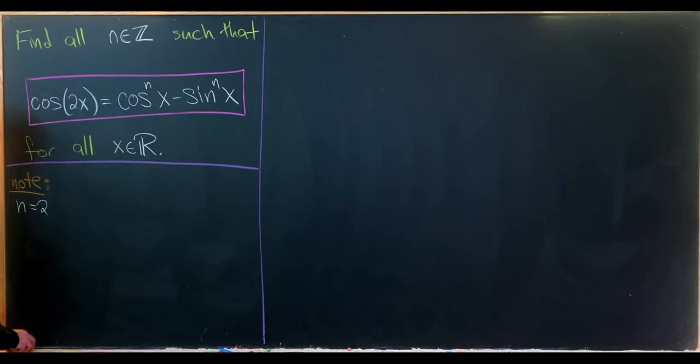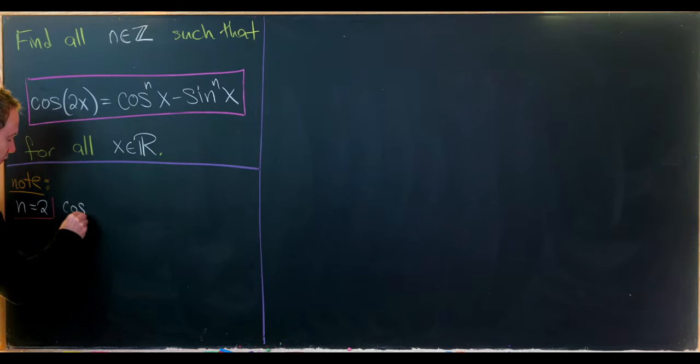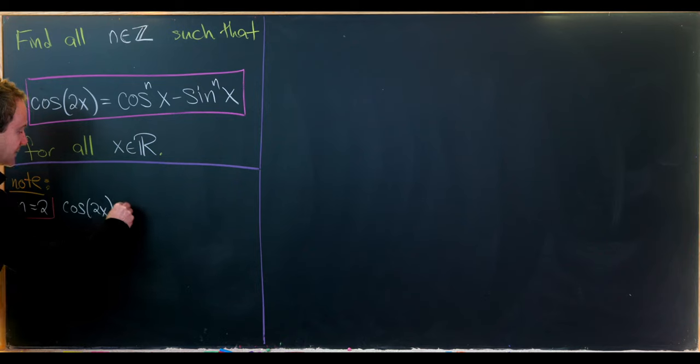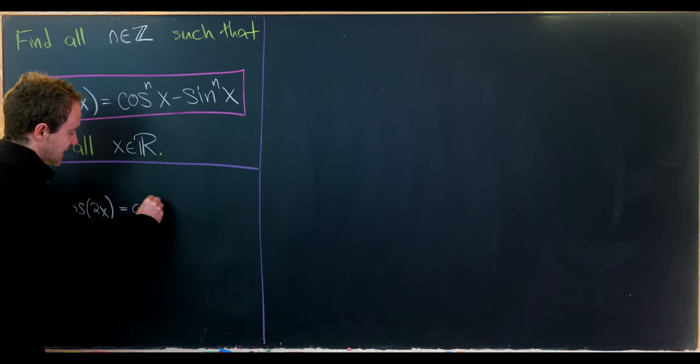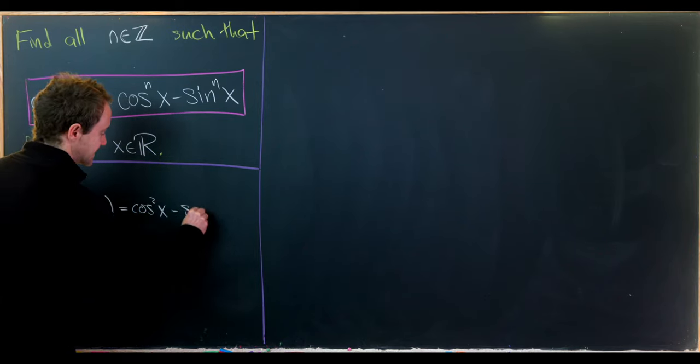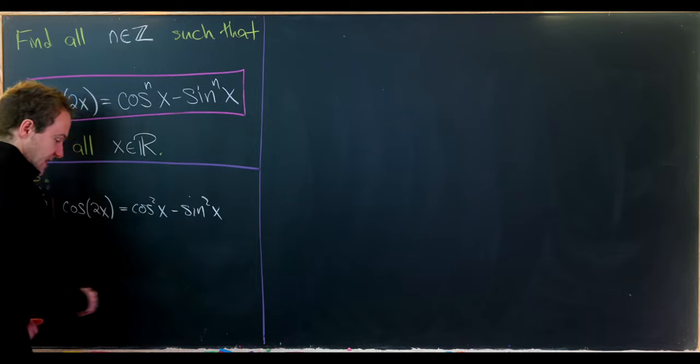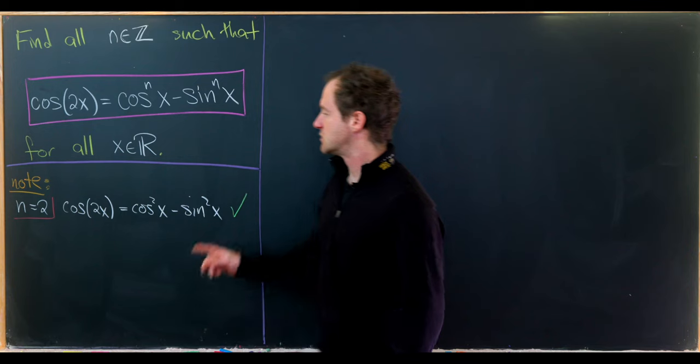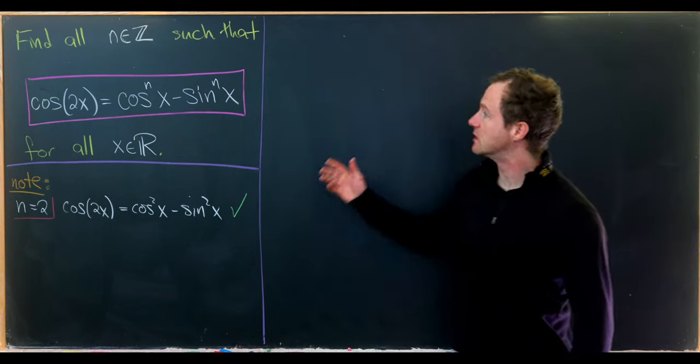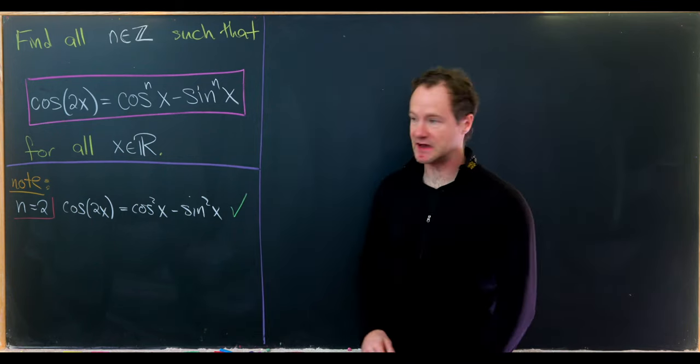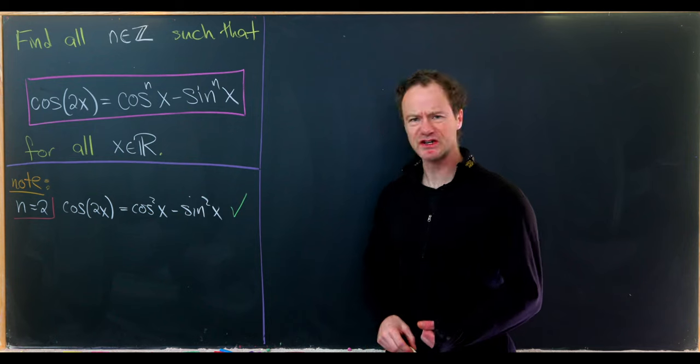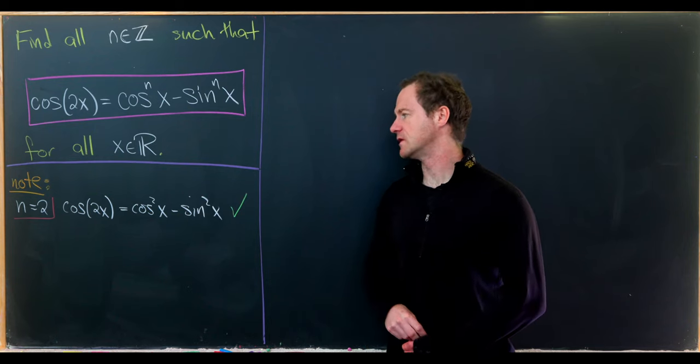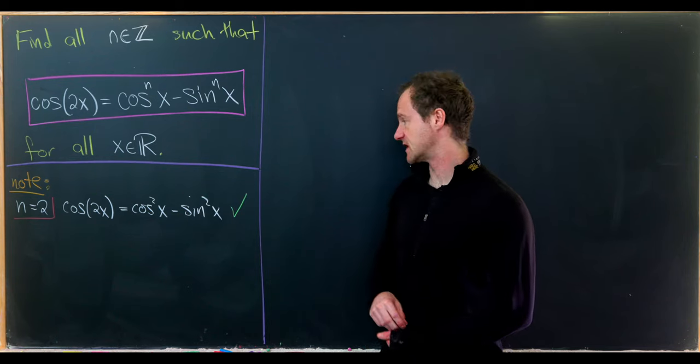Let's take the n equals 2 case and notice here we have cosine of 2x equals cosine squared of x minus sine squared of x. This is true, so the value of n equals 2 does produce this identity. But the question is, is this the only value of n that produces this identity?